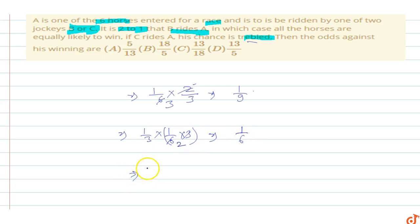So the winning probability P equals 1/9 plus 1/6. This is 2 plus 3 over 18, which equals 5/18.